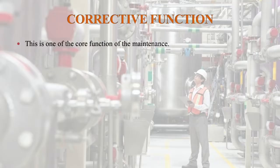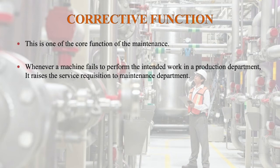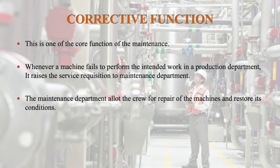Corrective maintenance function. This is one of the core functions of maintenance. Whenever a machine fails to perform its intended work in a production department, it raises a service requisition to the maintenance department. The maintenance department allocates the crew for repair of the machines and restores their condition. Minor repairs involve changing a small component — for example, on a motorcycle or cycle, the chain may become elongated giving some sound, or it may lack grease and give some sound. Such small repairs are corrected through the corrective maintenance function.